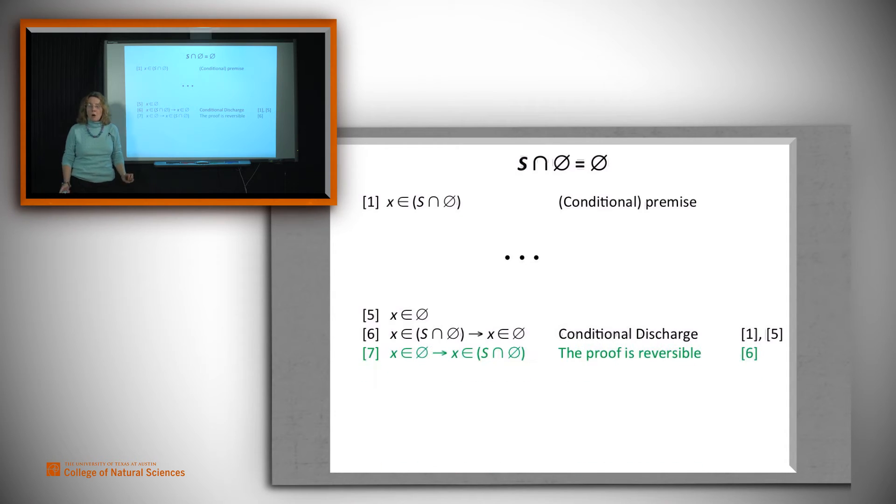Now suppose we can argue that the proof that we just did is reversible. And I've written this in green because we can't, in fact, argue that. We haven't seen the proof yet. But imagine that we can. Then we don't have to write a second proof that x being in the empty set implies that it's also in x intersect the empty set. We know that.